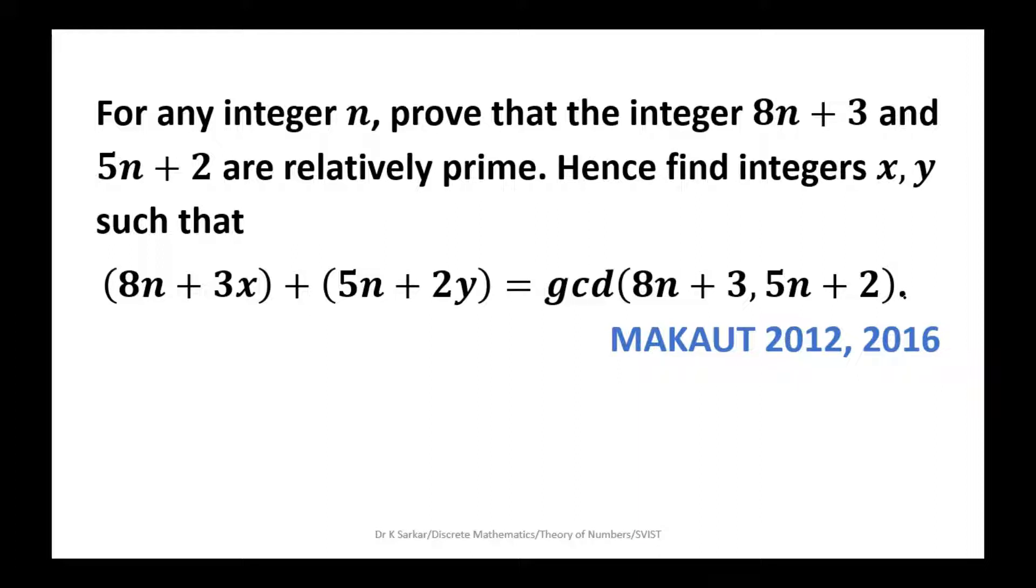For any integer n, prove that the integers 8n+3 and 5n+2 are relatively prime. Hence find integers x, y such that (8n+3)x + (5n+2)y equals gcd(8n+3, 5n+2). This question appeared in MAKAUT 2012 and 2016.